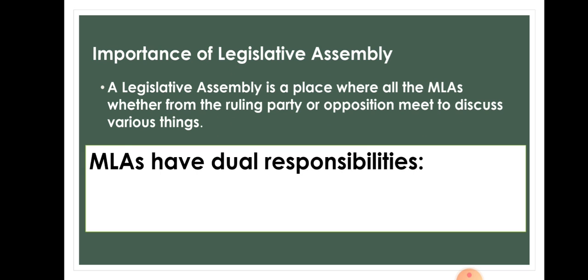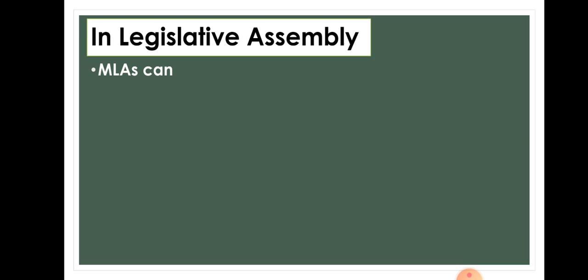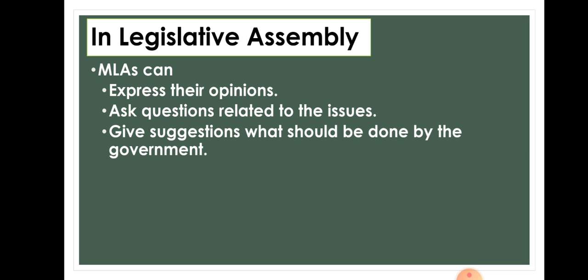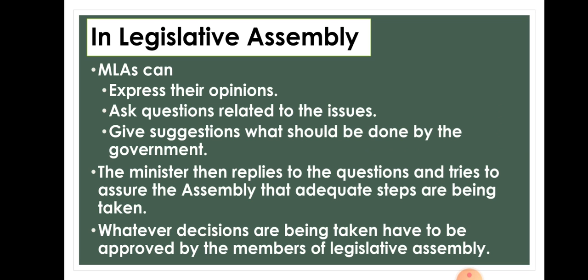The Legislative Assembly is a place where all the MLAs, whether from the ruling party or opposition party, meet to discuss various things. MLAs have dual responsibility — one as an MLA and the other as a Minister. In the Legislative Assembly, MLAs can express their opinions, ask questions related to issues in different constituencies, and give suggestions on what should be done by the government. The Minister then replies and tries to assure the Assembly that adequate steps are being taken. Whatever decisions are made have to be approved by the members of the Legislative Assembly.